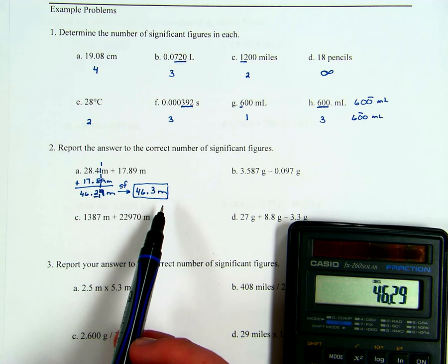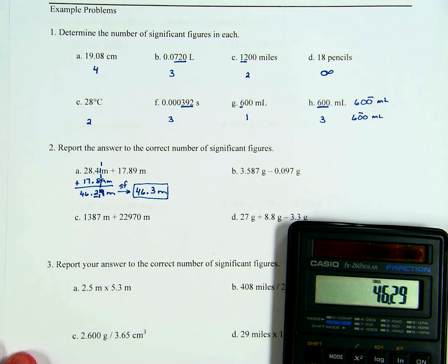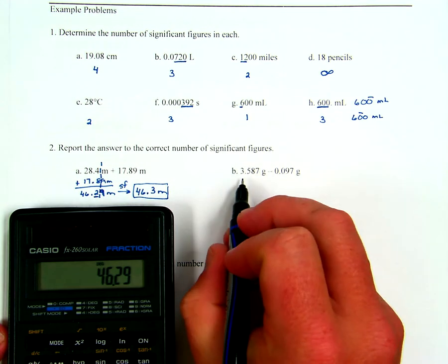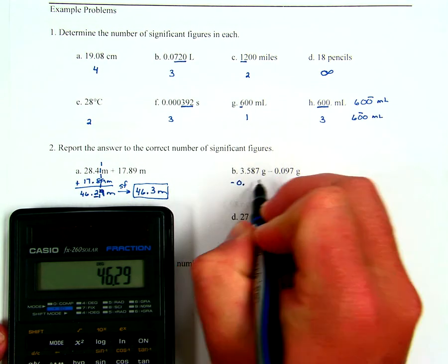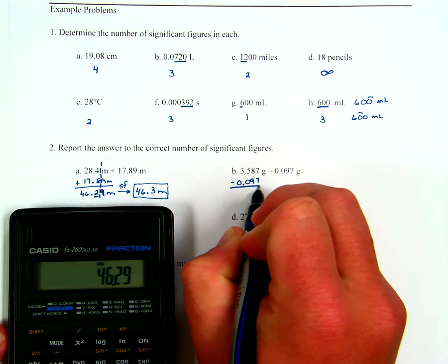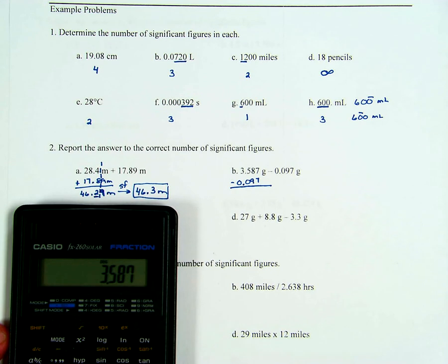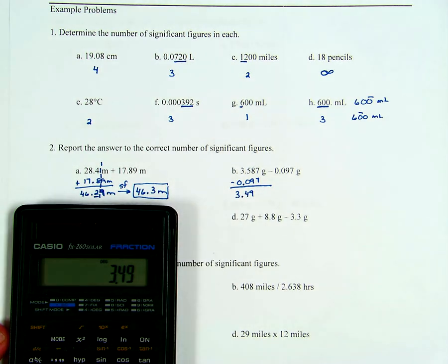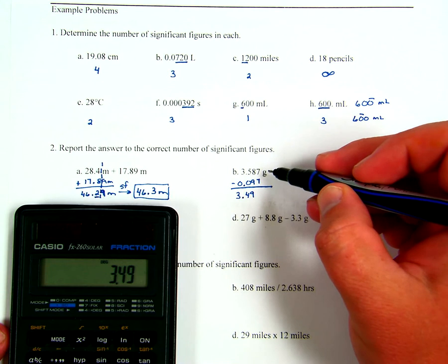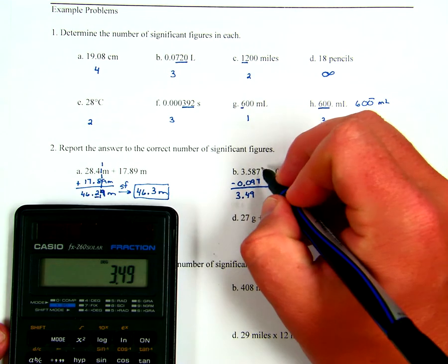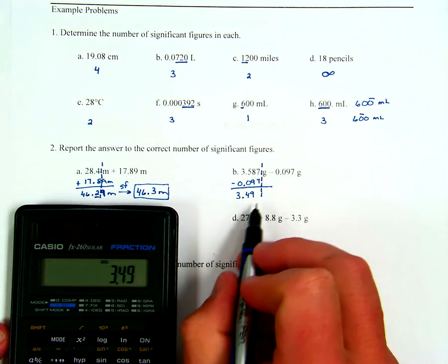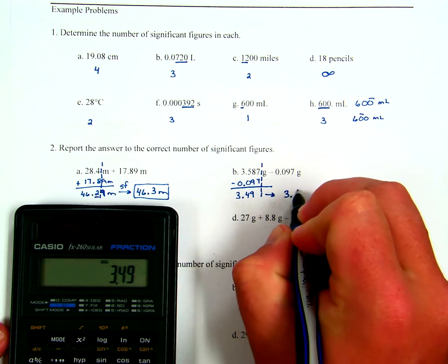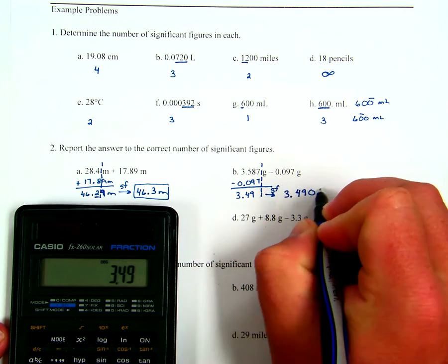Question B is subtraction, but the same rules apply. 3.587 grams minus 0.097 grams. The calculator gives 3.49. Both measurements have significant figures to the thousandths place, so my dotted line goes to the thousandths. My answer is therefore 3.490 grams — I get to add a zero to reach the thousandths place.